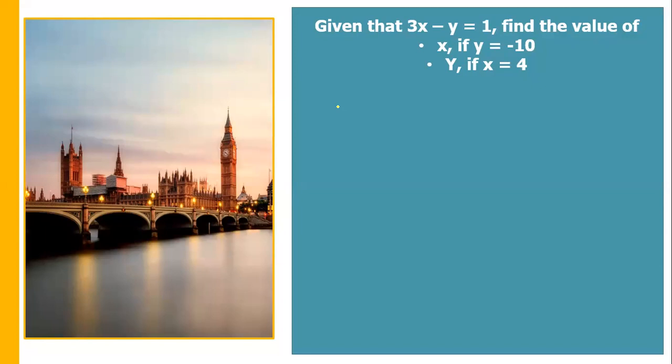For example, the given equation is 3x minus y is equal to 1. Find the value of x if y is equal to negative 10, and then find the value of y if x is equal to 4.